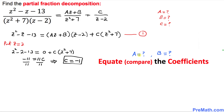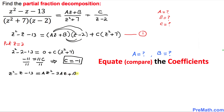We still need to find a and b. To do that, we will use the method of equating or comparing coefficients. Let's expand equation number 1: the right side becomes az squared minus 2az plus bz minus 2b plus cz squared plus 7c.